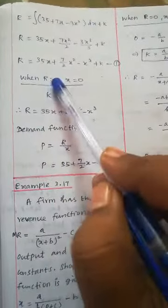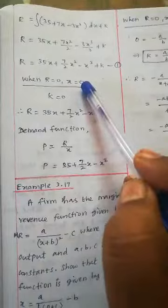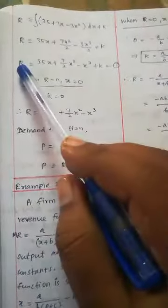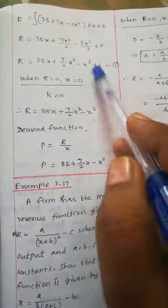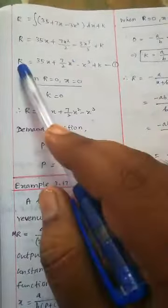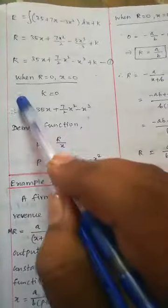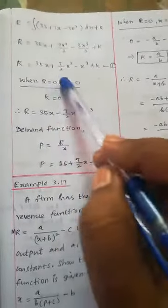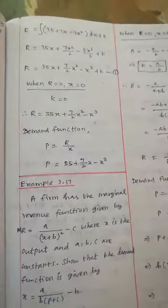When x = 0, at x = 0, if you put the value of x, the value of k = 0. When R = 0 at x = 0, we get k = 0.